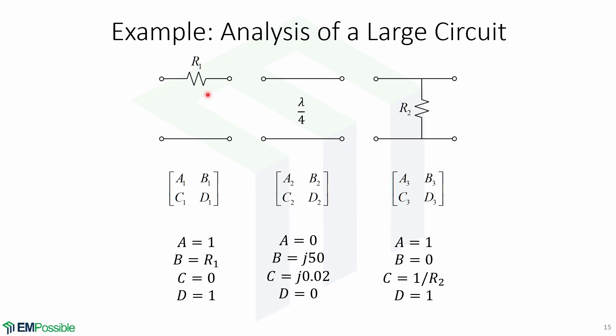We can look back at the common values for these networks to obtain the ABCD parameters. For this network, we have that A equals 1, B equals R1, C equals 0, and D equals 1. These are the parameters for the other two networks.